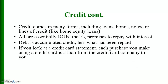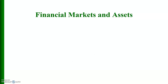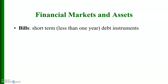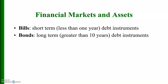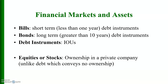If you look at a credit card statement, each purchase you make using a credit card is a loan from the credit card company to you. Your total debt is the sum of money you have borrowed from all your creditors. Bills are short-term debt instruments; bonds are long-term debt instruments — both are essentially IOUs with a promise to make payment along with interest.